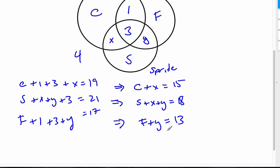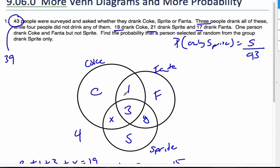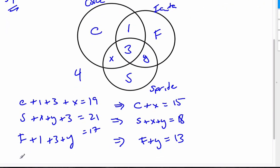So now I have a bunch of variables here, and there's one more piece of information that I've not used. And that's this 43, which is really 39, because I've already taken away the 4. If I add them all together, it gets 39. So what I can say is that C plus X plus F plus Y plus S plus 1 plus 3, all of those add up to 39.